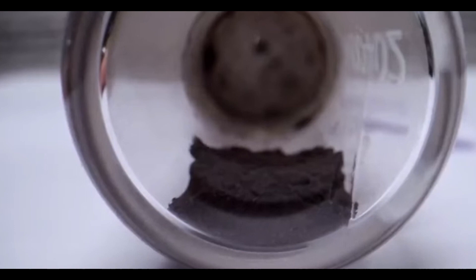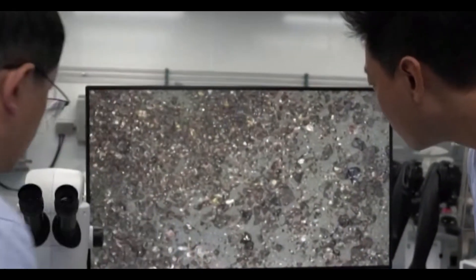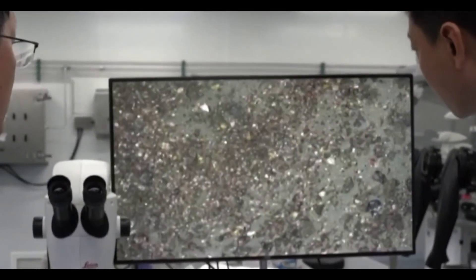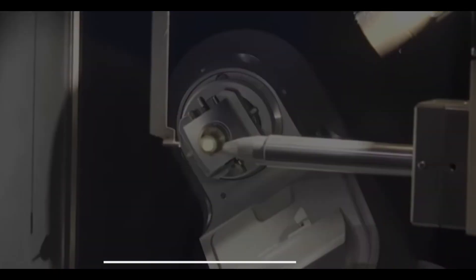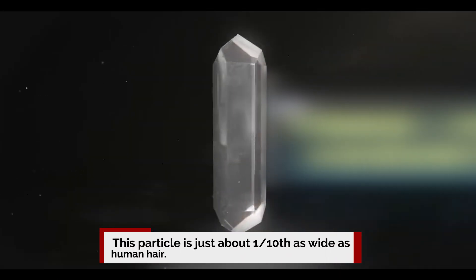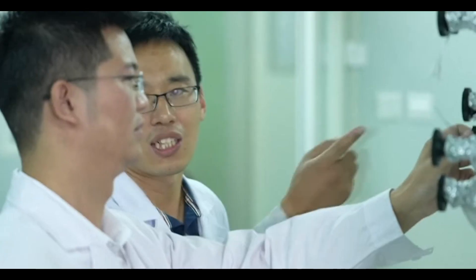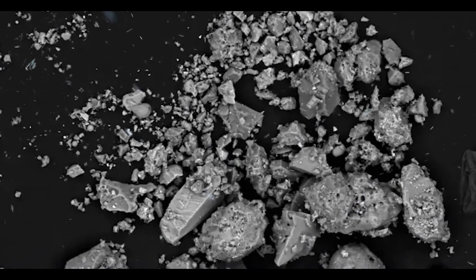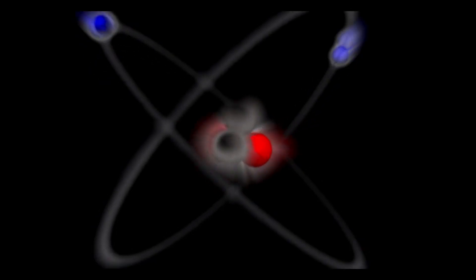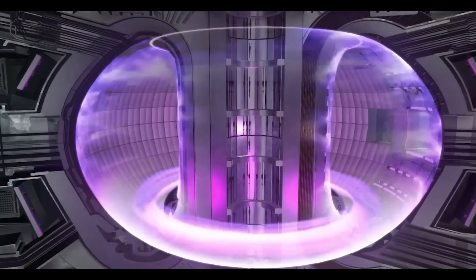The space agency distributed small samples of lunar material to nearly 100 groups for analysis, and one team from the Beijing Research Institute of Uranium Geology successfully managed to isolate a single particle of Chang'e-Site Y from the sample. This particle is just about one-tenth as wide as a human hair, and the team had to use several highly technologically advanced processes. What's more interesting is the fact that the Chang'e-Site Y contains helium-3, which is an attractive option for fueling some of our future nuclear fusion reactors.